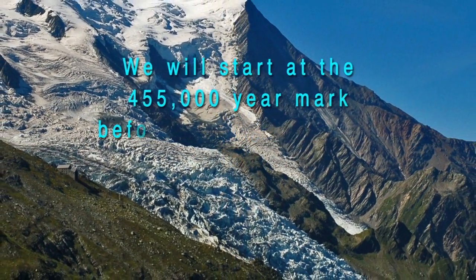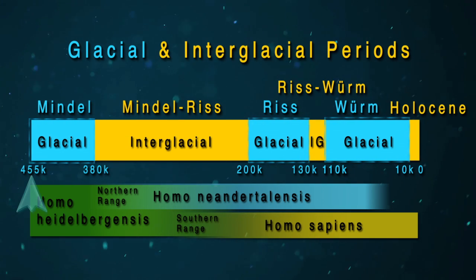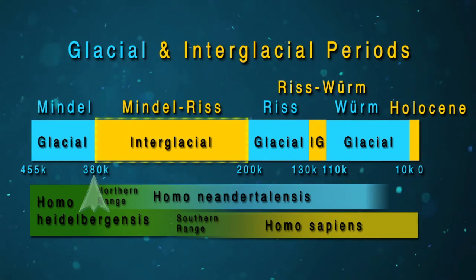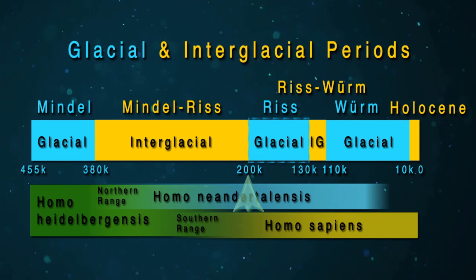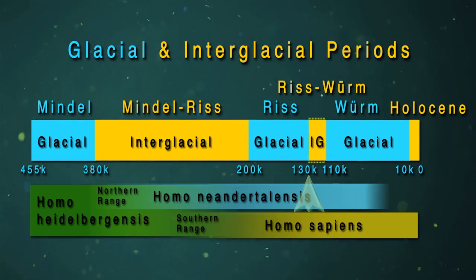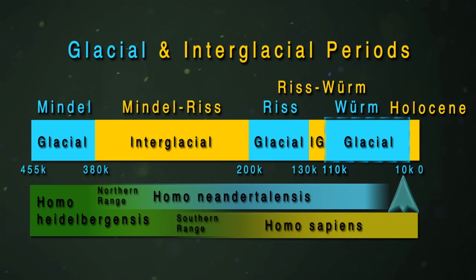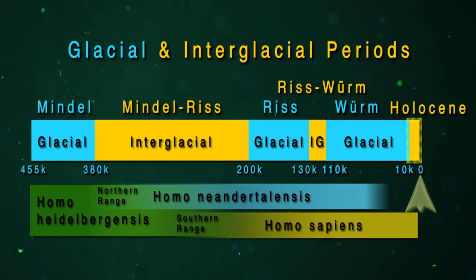We'll start at the 455,000 year mark before the present with the beginning of the Mindel glacial period. If we look at this graphic showing the glacial periods over the last 455,000 years, we see there are three main glacial periods and two major interglacial periods. The Mindel glacial period lasted from around 455,000 years ago to about 380,000 years ago. It was followed by the Mindel-Riss interglacial period, which lasted from 380,000 years ago to about 200,000 years ago. The Mindel-Riss interglacial was followed by the Riss glacial period, which lasted from 200,000 years ago to 130,000 years ago. The retreat of the Riss glaciers marked the beginning of the Riss-Würm interglacial period, which lasted from 130,000 to 110,000 years ago. Around 110,000 years ago the glaciers began to expand, marking the beginning of the Würm glacial period, which lasted till roughly 10,000 years ago. The 10,000 year point marks the official end of the Pleistocene and the beginning of the Holocene, the current geological epoch in which we now live.